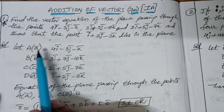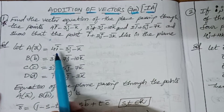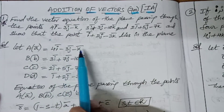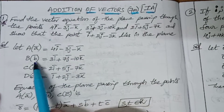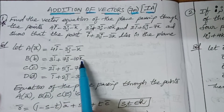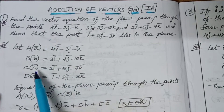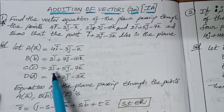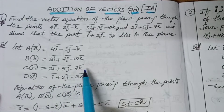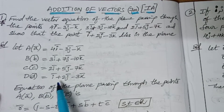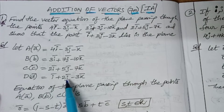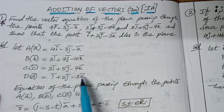Let us take the first vector as a = 4i minus 3j plus k, second one as b = 3i minus 7j minus 10k, third one as c = 2i plus 5j minus 7k, and the fourth one as d = i plus 2j plus 3k.